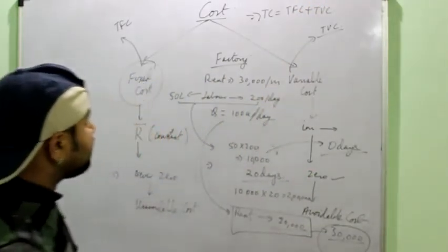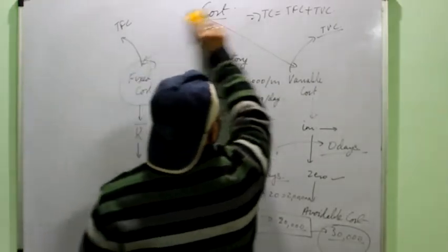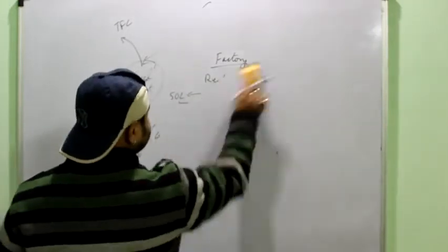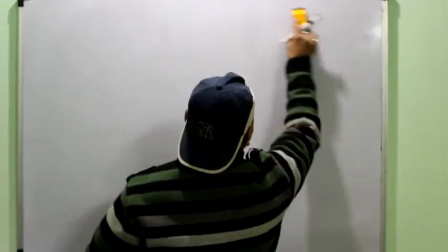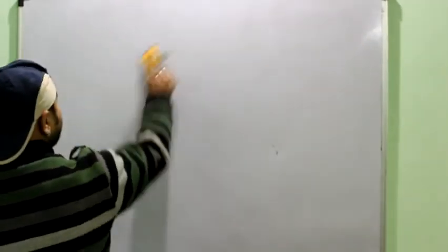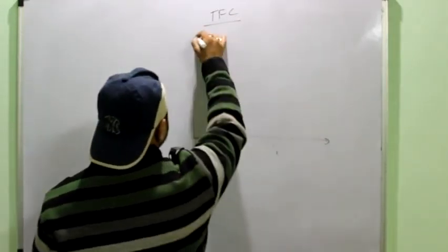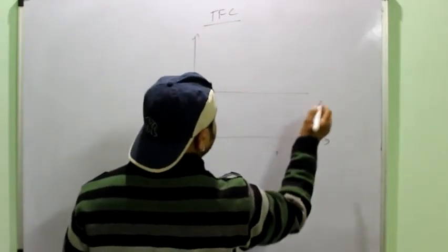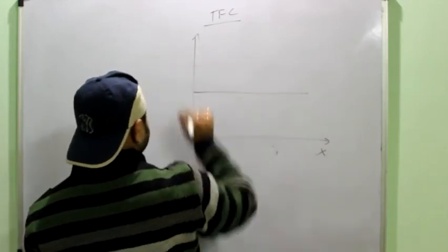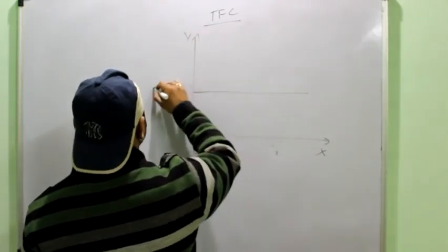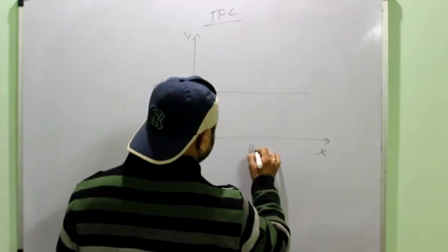Okay? Now, we will study that how the TFC behaves. The diagrammatic representation of the total fixed cost would be a horizontal straight line. Here on the Y-axis, I have the total fixed cost and X-axis is the units produced.